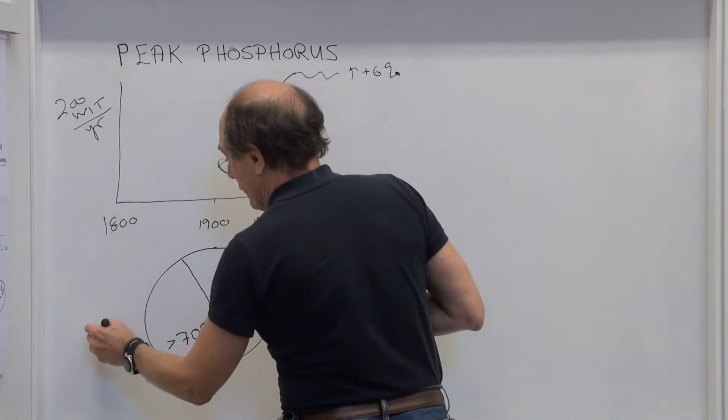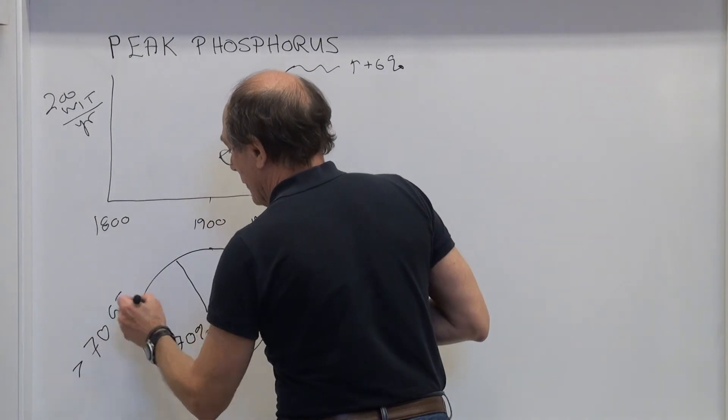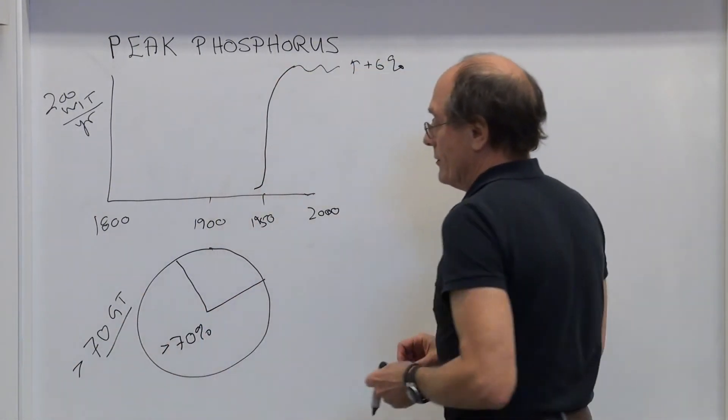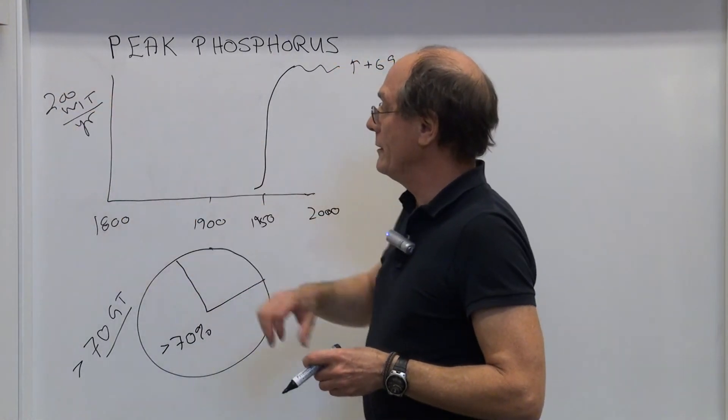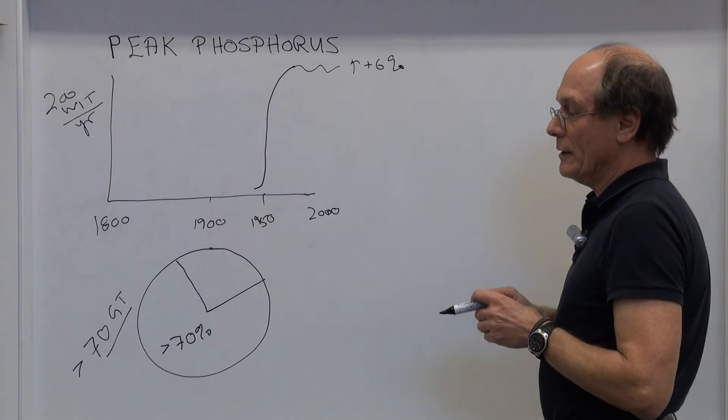We're talking about over 70 gigatons of rock. Well, 70 gigatons, and we're extracting at 200 megatons per year. What does that mean in terms of how long it's going to last?